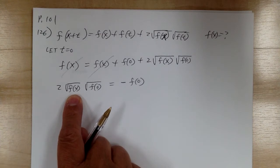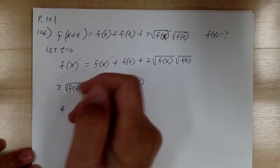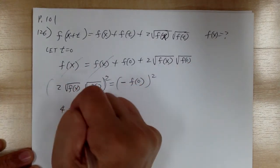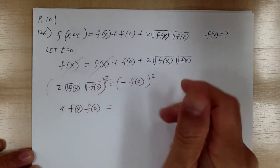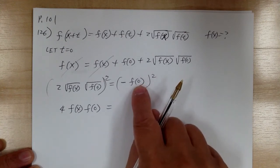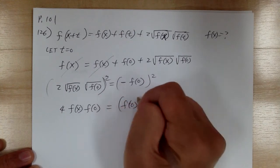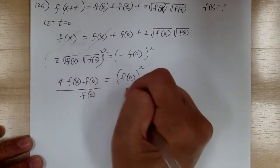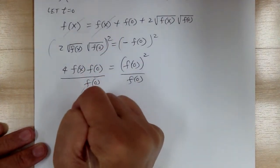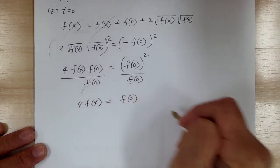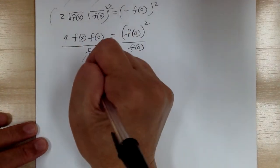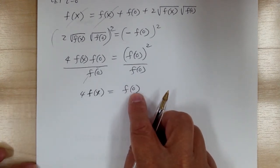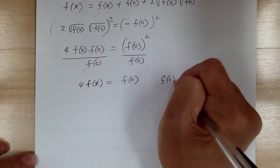We need to solve for f of x, so square both sides: 4 times f of x times f of 0 equals f of 0 squared — since negative squared gives positive. Then divide both sides by f of 0: this cancels one f of 0, so 4 f of x equals f of 0. Now, f of 0 means all variables are 0, making it a constant. We'll call it a.